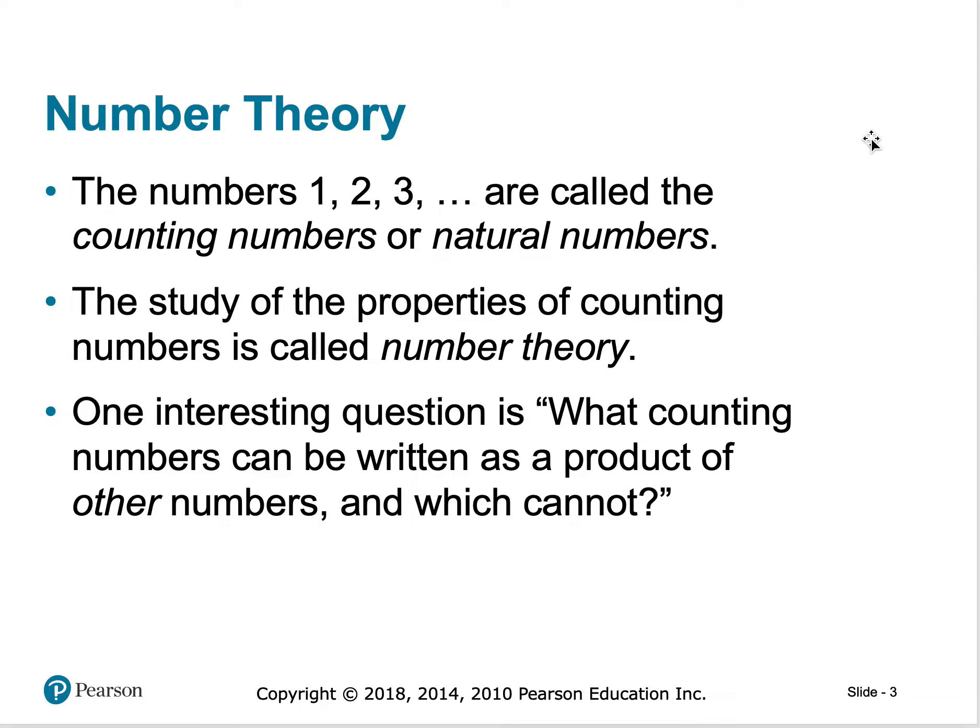If I were to start classifying numbers, numbers where I can count objects are called counting numbers or natural numbers because they naturally occur. One and a half is not a number I can count on my fingers, so I can't use one and a half as an example of a natural number. Studying all of these properties is how we found the study of number theory.